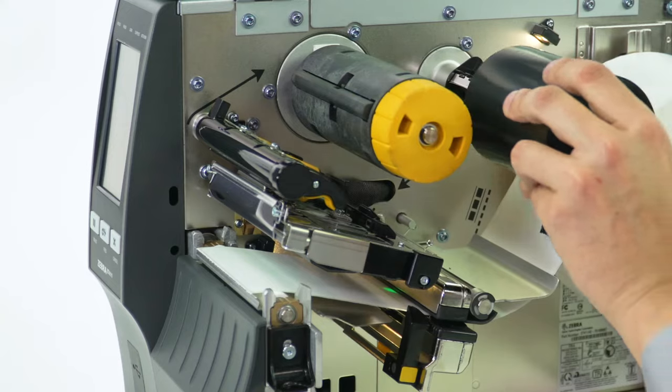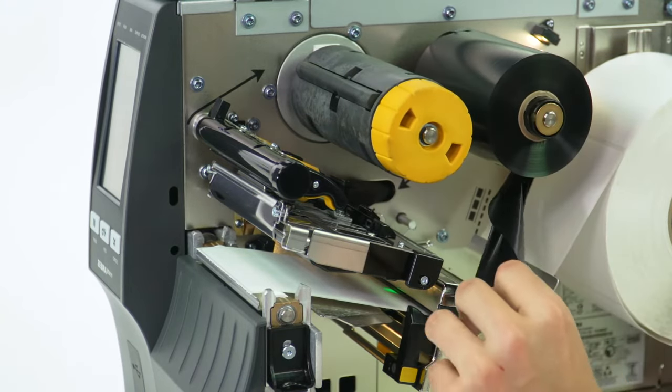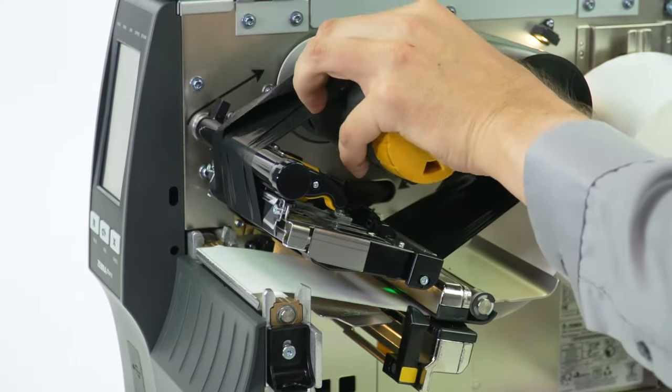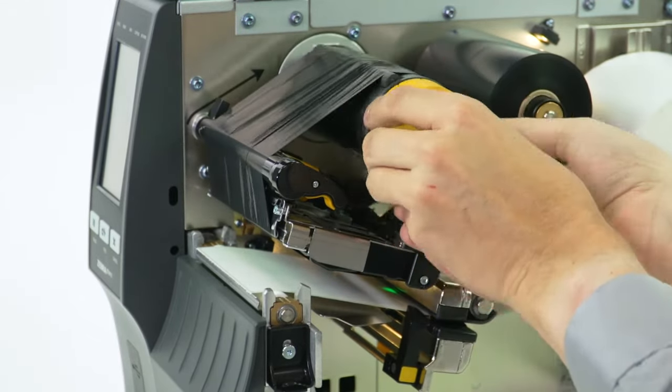Place the ribbon on the ribbon supply spindle and push it back. Bring the ribbon under the printhead and wrap it around the ribbon take-up spindle. Turn the spindle to remove any ribbon slack.